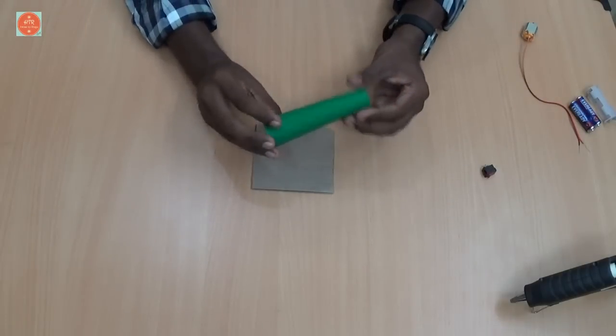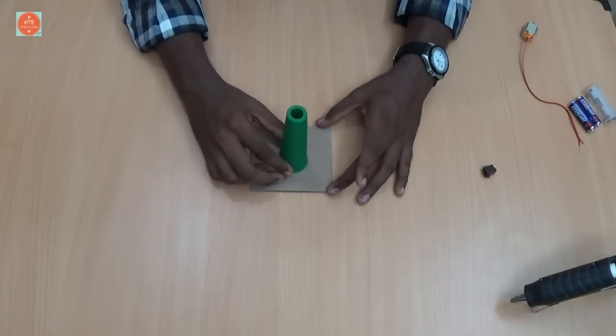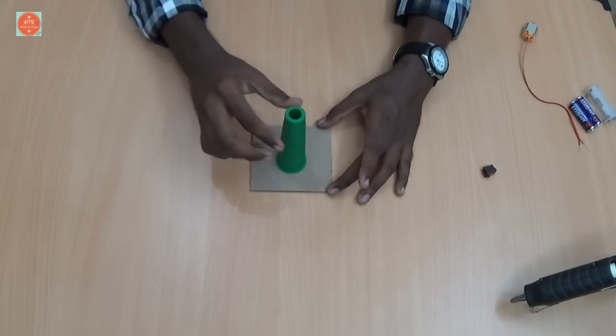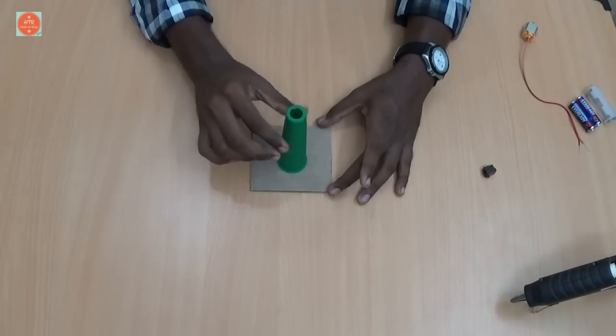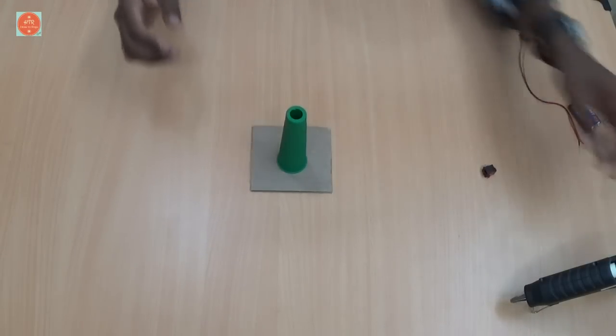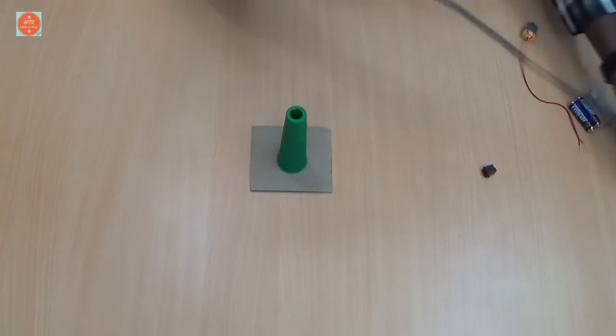Then take the yarn cone and place it in the center of the cardboard like this. Now stick it using the glue gun.